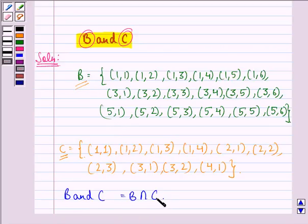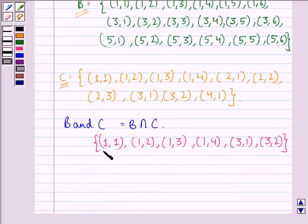That means the sample space for B and C will be all those sample points which are in B as well as in C. So that will be the common points of B and C. And that will be the sample space containing the sample points (1,1), (1,2), (1,3), (1,4), (3,1), (3,2).